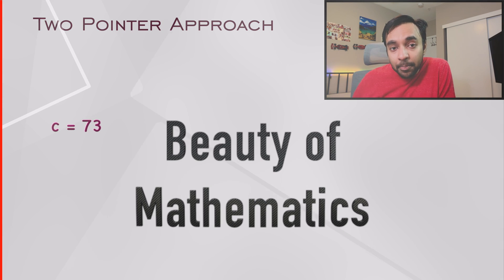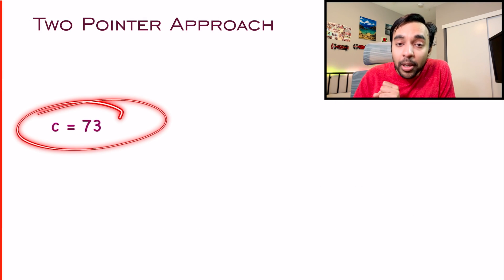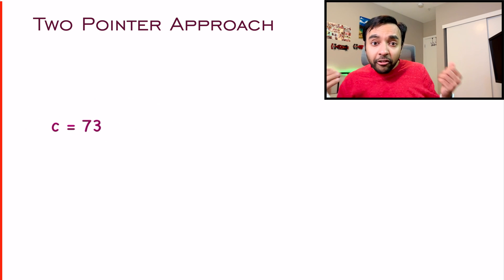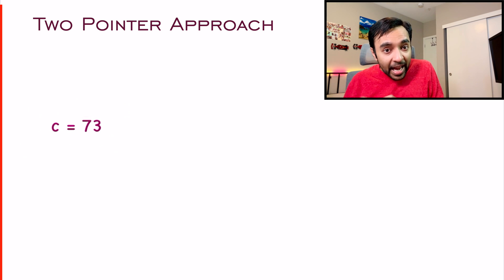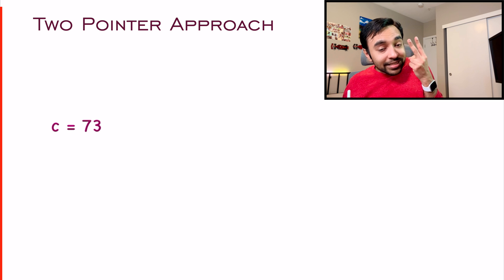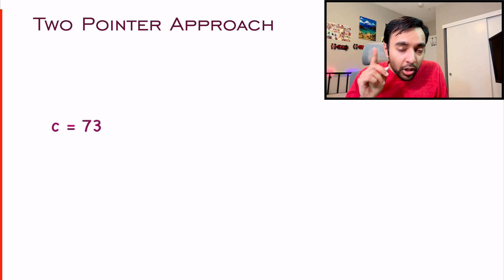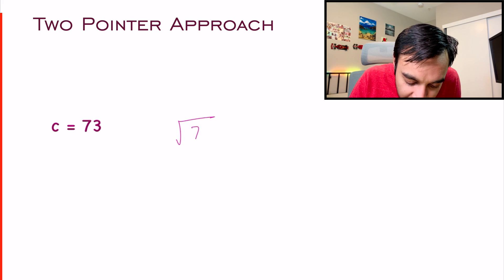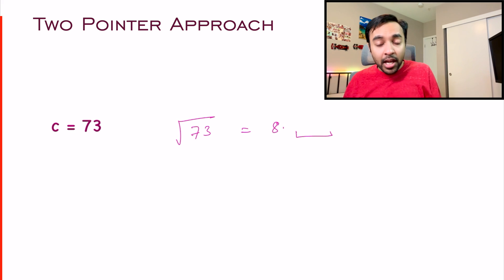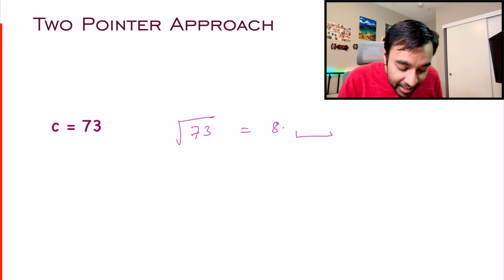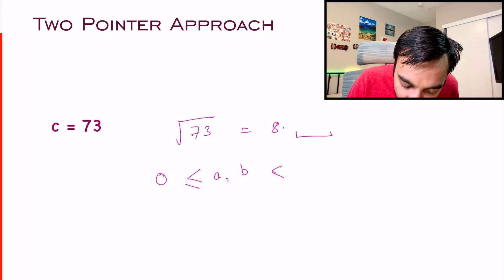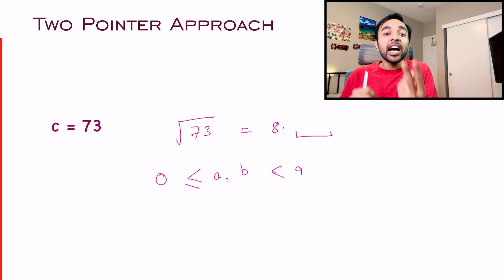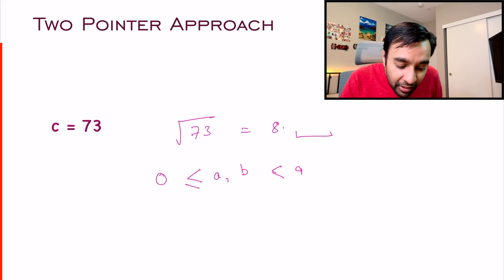This is where some mathematics comes in. If you remember, I told in the beginning that this problem can be solved using the two-pointer approach. But where do you even place these two pointers? Where is the array? So try to think about it. When my number is 73, and you have to form this number using the square of two different integers, let us first find out the square root of 73. Square root of 73 will be equal to 8 point something, because 9² is 81 and 8² is 64.